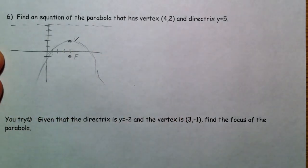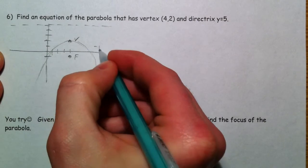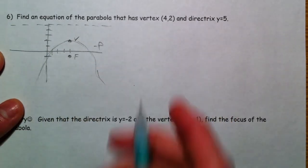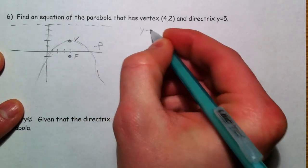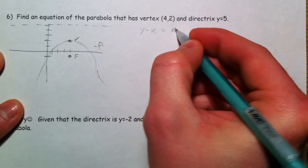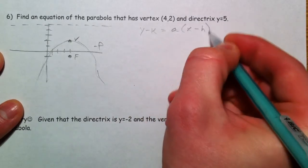So you know it's got to be an x squared equation? Negative p, because it opens down. So I'm going to write y minus our k equals our a times our x minus h squared.